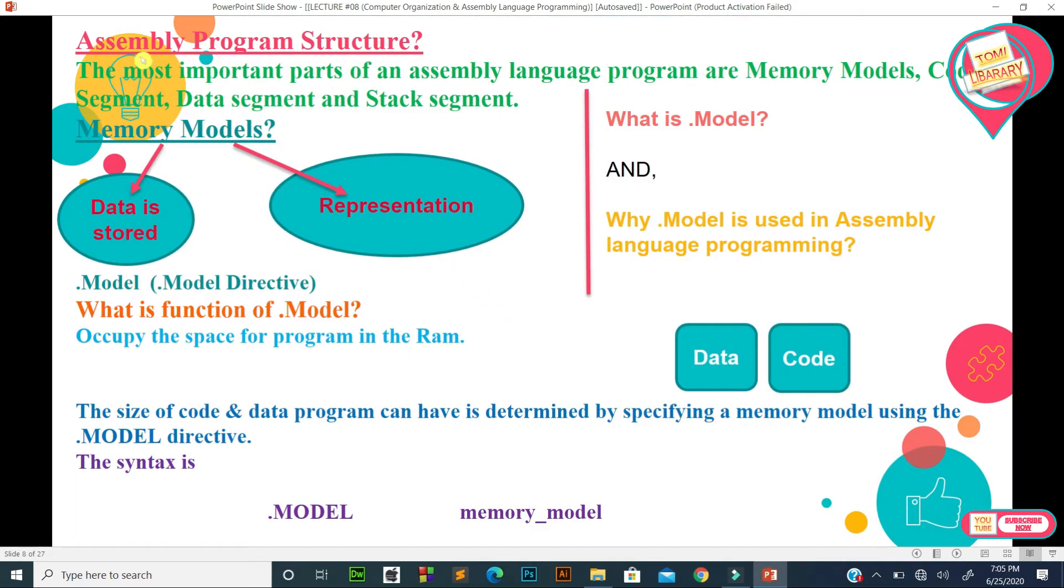Assembly program structure: The most important parts of an assembly language program are memory models, code segment, data segment, and stack segment. In previous lecture number 8, I explained code segment, data segment, and stack segment overall. If you haven't watched that lecture, please watch it. I hope it will be helpful for you.